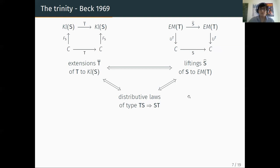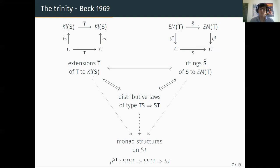These are really three sides of the same coin. When you have any of these three things, you get a monad structure on the composite functor ST. The only hard part is to get a multiplication: provided you have a distributive law, you can define a multiplication for ST by first making the functors T and S commute, yielding SSTT, and then applying both multiplications of S and T to get a monad structure.